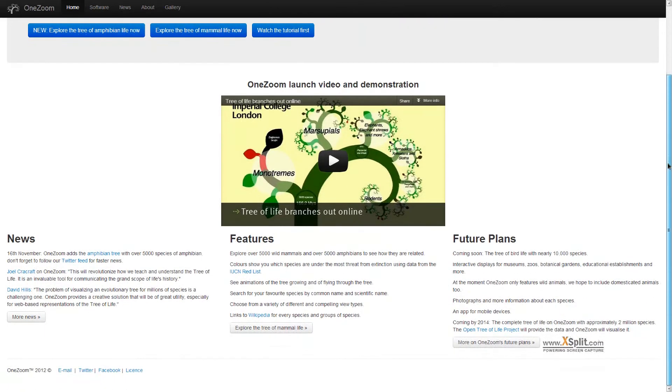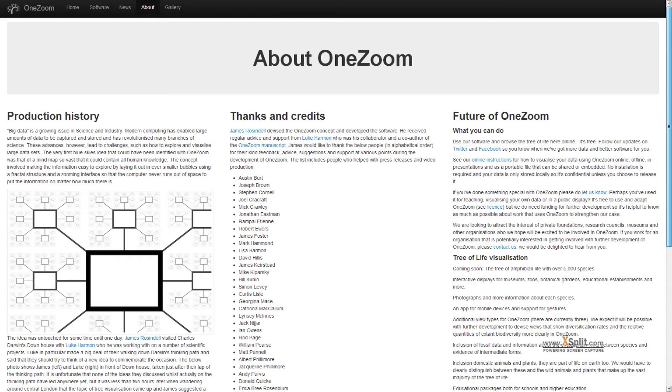OneZoom.org has a really nifty map called the Tree of Life Explorer that shows the effects that humans may cause to up to 5,000 different species of mammals and amphibians.